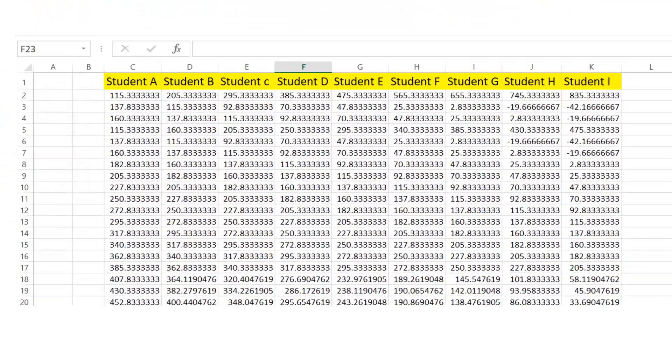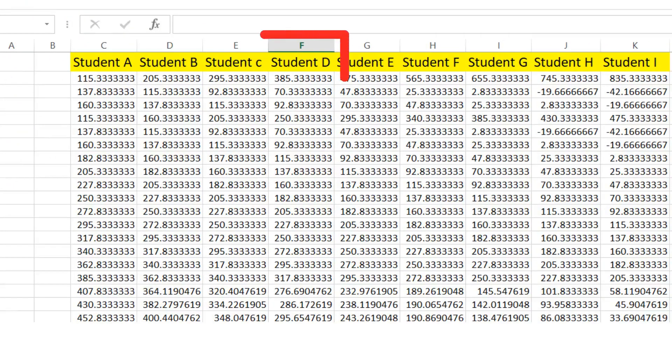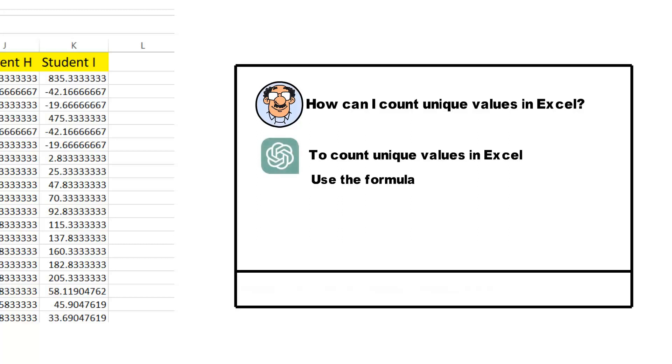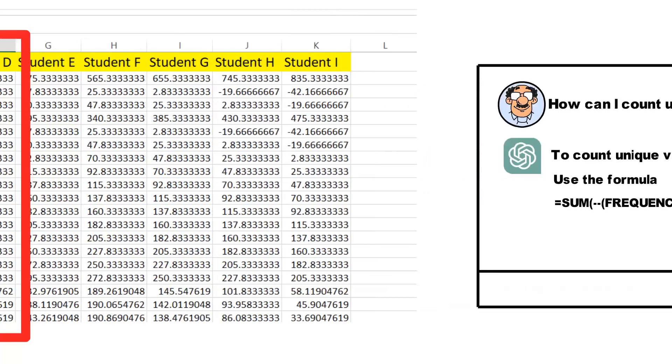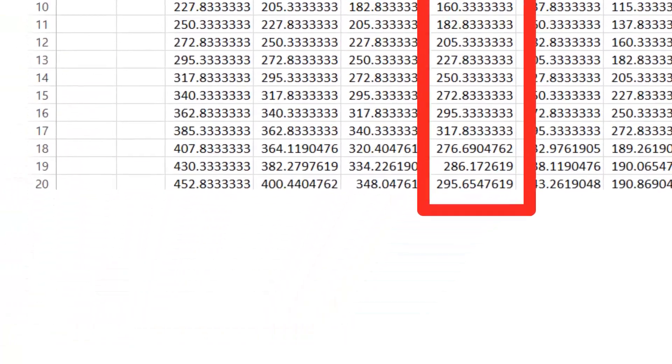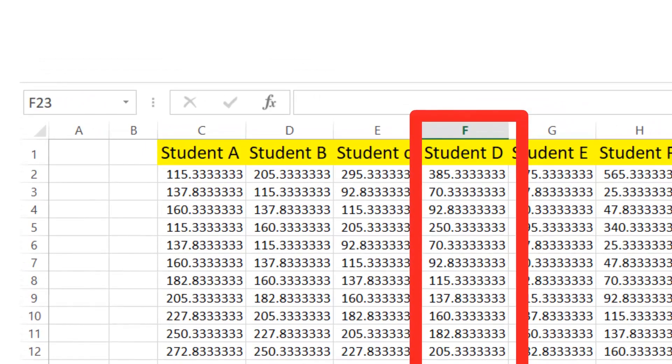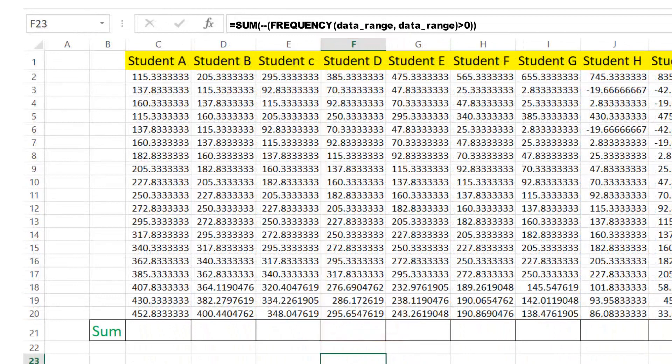Suppose you're dealing with a large data set, and want to find an efficient way to count the number of unique values in a column. You might ask, how can I count unique values in Excel? ChatGPT could guide you to use a formula like equals sum, frequency, data underscore range, data underscore range, greater than zero. Explaining that the frequency function in Excel calculates how often values occur within a range of values, and with the added double dash operator, this formula counts unique values.